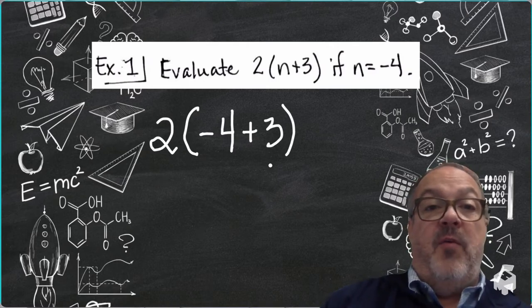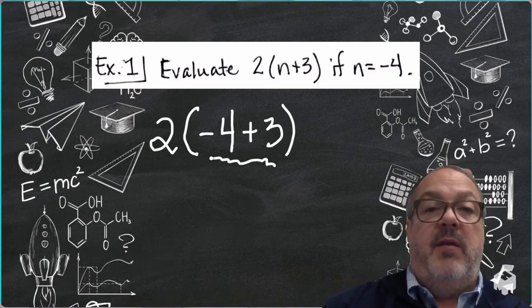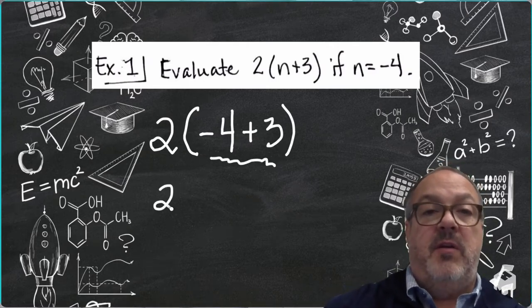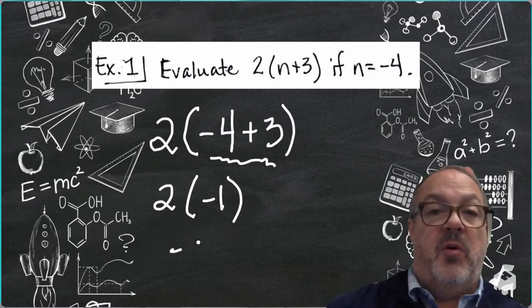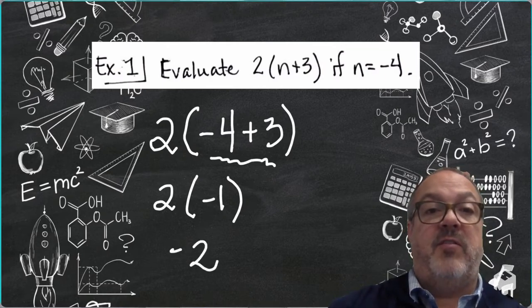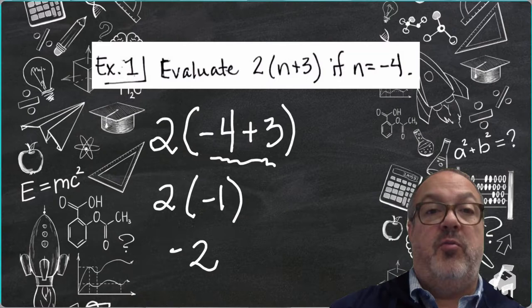Now, negative 4 plus 3, I'm going to do that first, and negative 4 plus 3 is going to be negative 1. So now, all I have to do is multiply these two factors, and I get 2 times negative 1, which is negative 2.